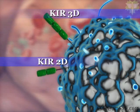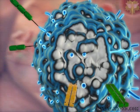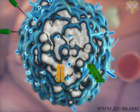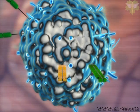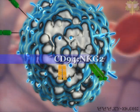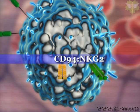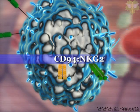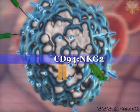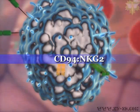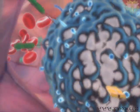However, the predominant control of natural killer cell activation occurs through the C-type lectin receptor CD94-NKG2 heterodimer.